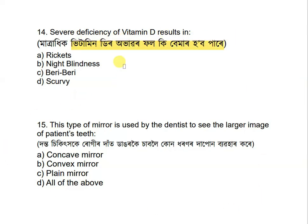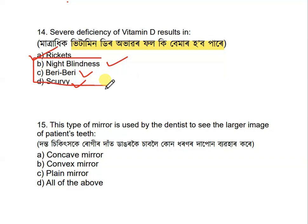Question 14: Severe deficiency of vitamin D results in which disease? Options are: Rickets, night blindness, beriberi, and scurvy. The correct answer is Rickets — vitamin D deficiency causes Rickets. Night blindness is due to vitamin A, beriberi is vitamin B, and scurvy is vitamin C.